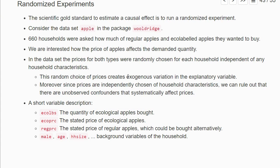Moreover, since prices were independently chosen from household characteristics, we can rule out unobserved confounders. None of the household characteristics are systematically correlated with the offered prices.